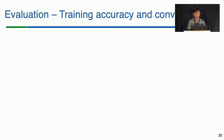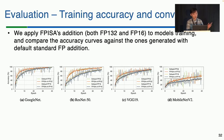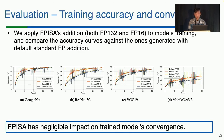Let's first see FPISA's impact on training convergence and accuracy. We compare end-to-end accuracy curves of the standard edition and FPISA edition with both FP32 and half-precision FP16. From this plot, we can see that for both FP32 and FP16, the FPISA curve highly overlaps with the standard curve. Hence, the errors introduced by the FPISA mechanism do not really affect training convergence and final model accuracy.